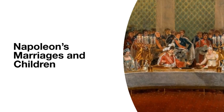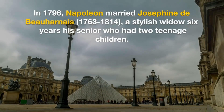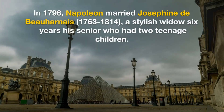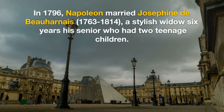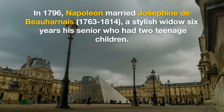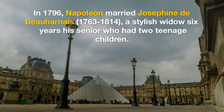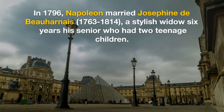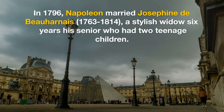Napoleon's Marriages and Children. In 1796, Napoleon married Josephine de Beauharnais (1763–1814), a stylish widow six years his senior who had two teenage children.